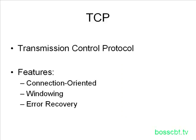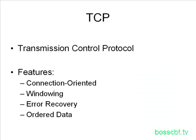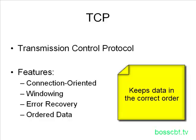The next feature is error recovery. This is why TCP is known as a reliable protocol — it can detect when packets are lost in transmission and will retransmit them. Finally, TCP is known for its ability to order data. On an IP network, no two packets necessarily have to take the same path, which means they can arrive at the destination out of order — perhaps packet two will arrive before packet one. TCP has the ability to order them back in their original sequence.